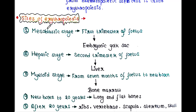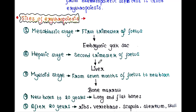First is the mesoblastic stage. In the first trimester of the fetus, erythropoiesis occurs in the embryonic yolk sac. Next is the hepatic stage. This is the second trimester of the fetus, and at that time erythropoiesis occurs in the liver.